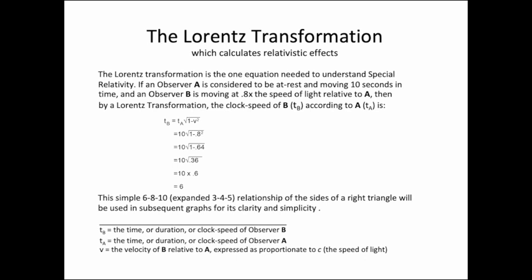The term ta here refers to the clock speed of an observer called A, and the term tb is the clock speed of an observer called B. If the time elapsed for A is 10 seconds, and B is moving at 80 percent the speed of light, which is universally designated with the letter c, so in other words, moving at 0.8 times c, then by taking the algebraic steps displayed here, the clock of B will be found to tick only six seconds relative to A's 10 seconds.